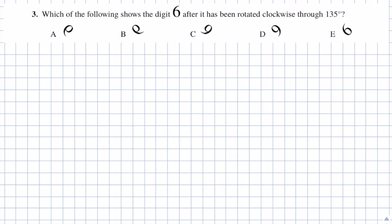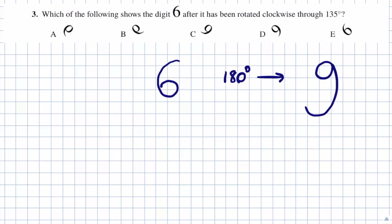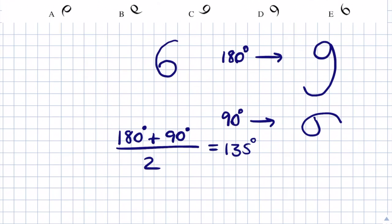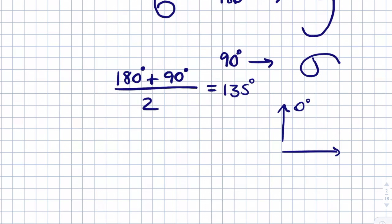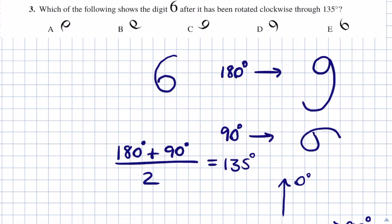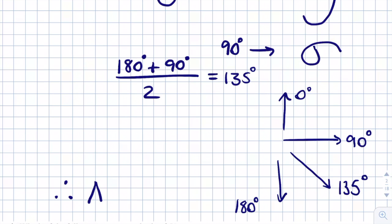Question 3: which of the following shows the digit 6 after it has been rotated clockwise through 135 degrees? We know this is what 6 looks like unrotated. Rotated 180 degrees it looks like a 9, and rotated 90 degrees clockwise it looks something like this. If we add 180 and 90 and divide by 2, we get 270 divided by 2 which is 135 degrees. So the direction at 135 must be exactly halfway between 90 and 180 degrees. We need to find a 6 pointing in that direction, which agrees with answer D. Therefore answer equals D.